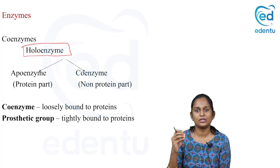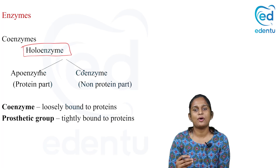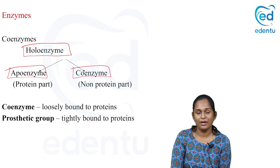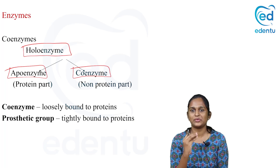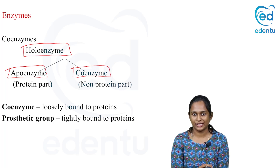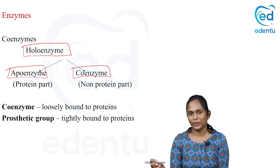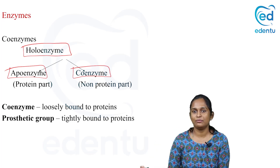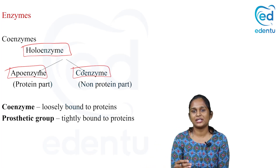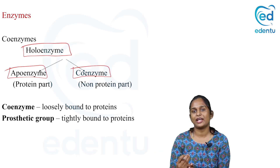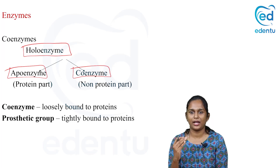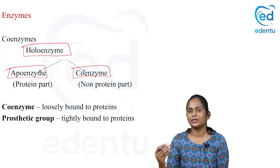Holoenzyme means the complete enzyme. When the apoenzyme — the protein part — is bound to the coenzyme, it forms the holoenzyme. Apoenzyme is the protein part of the enzyme; the non-protein part is called coenzyme. If the non-protein part is loosely bound, it is called coenzyme; if it is tightly bound, it is called prosthetic group. Both coenzyme and apoenzyme combine to form the complete enzyme — the holoenzyme — which can then perform its enzymatic activity.